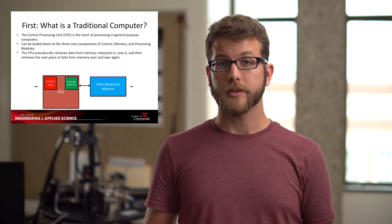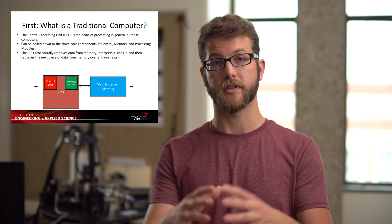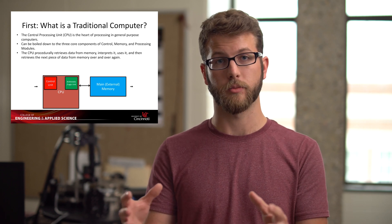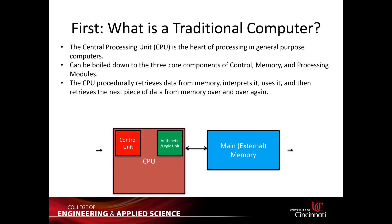This central processing unit is made up of three different core components. So you have the CPU, the processor, which is then made up of three different things. Those three different things are something called a control unit, an arithmetic or logic unit, and then you have temporary internal memory that's specific only to the CPU.